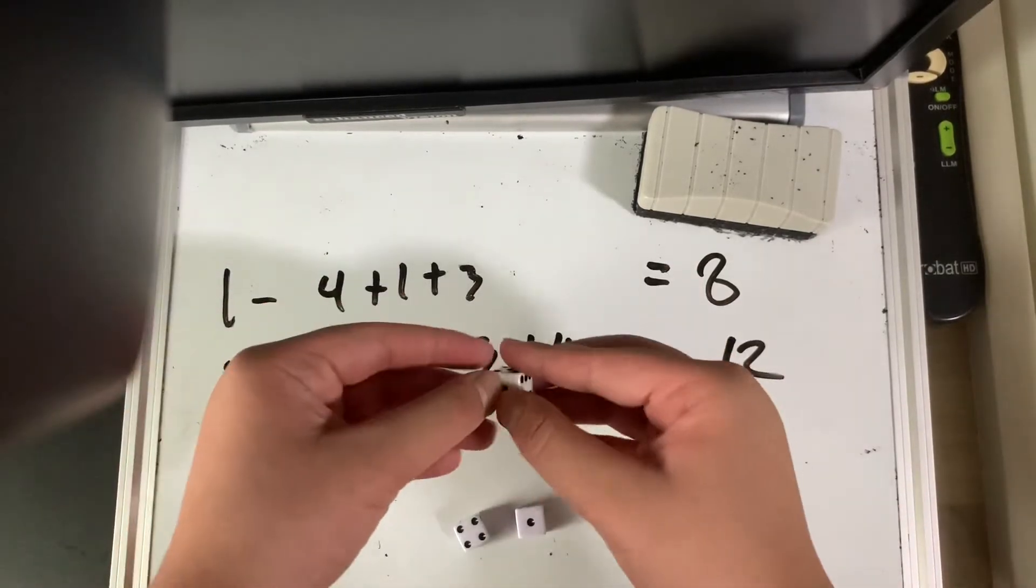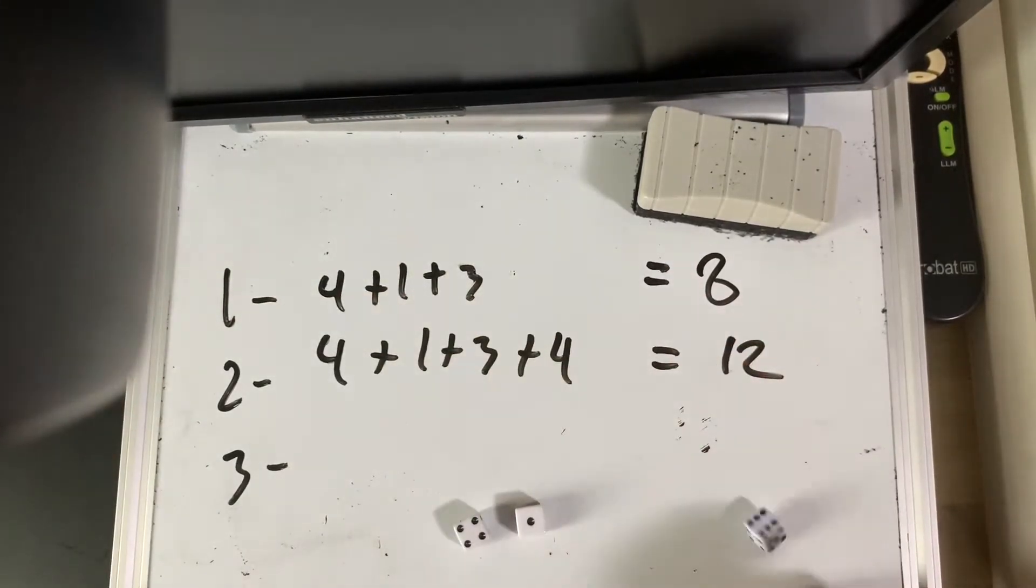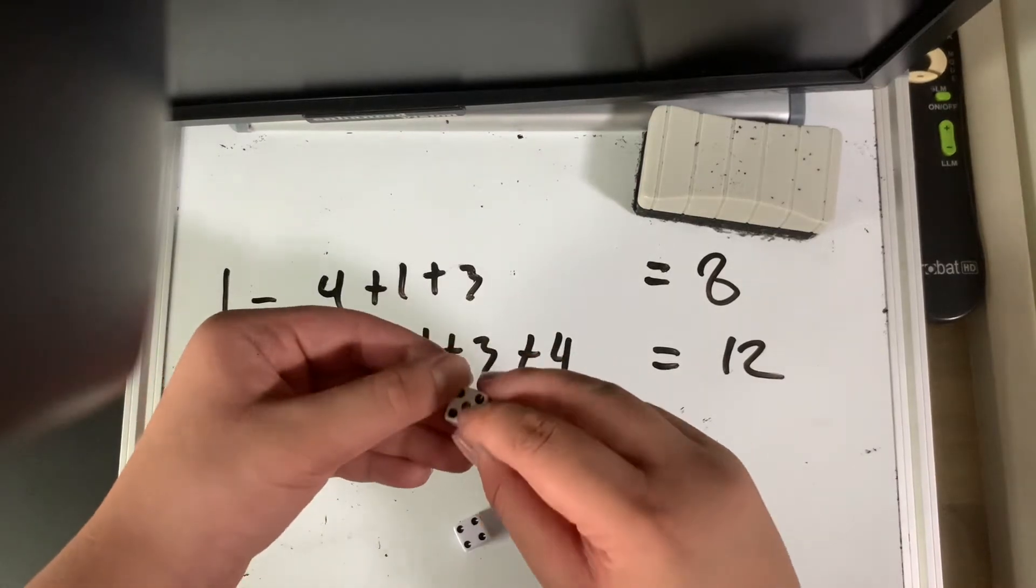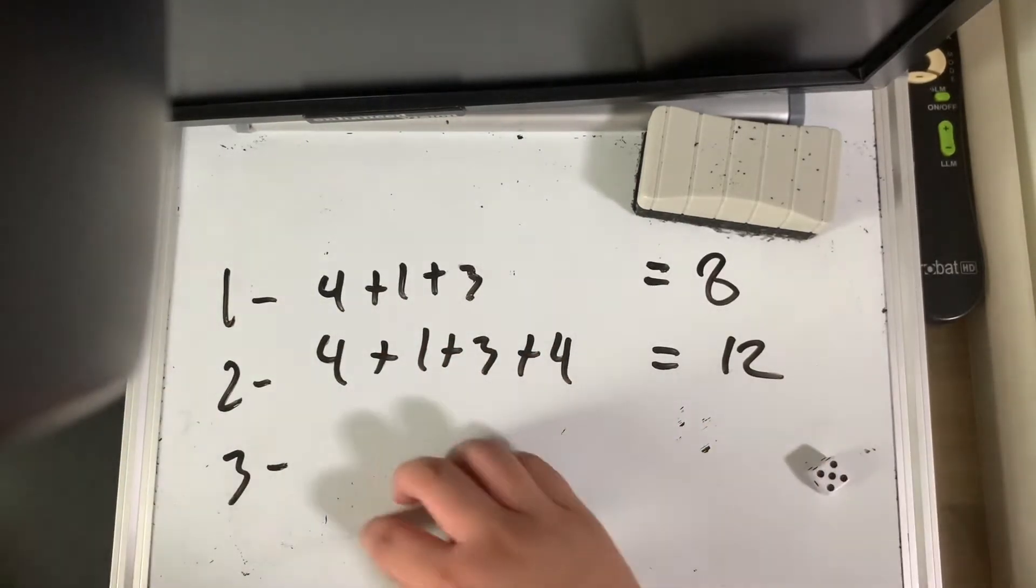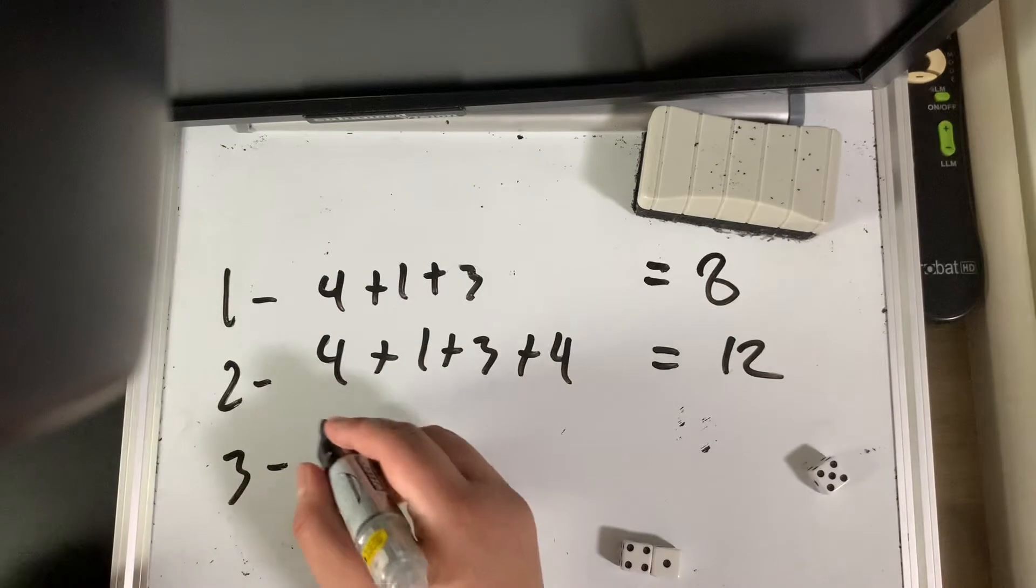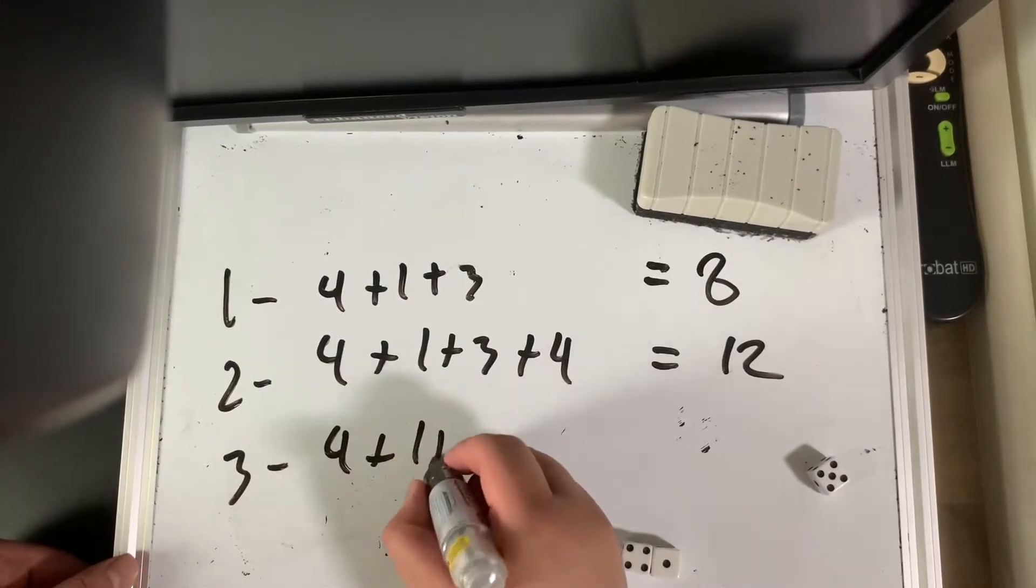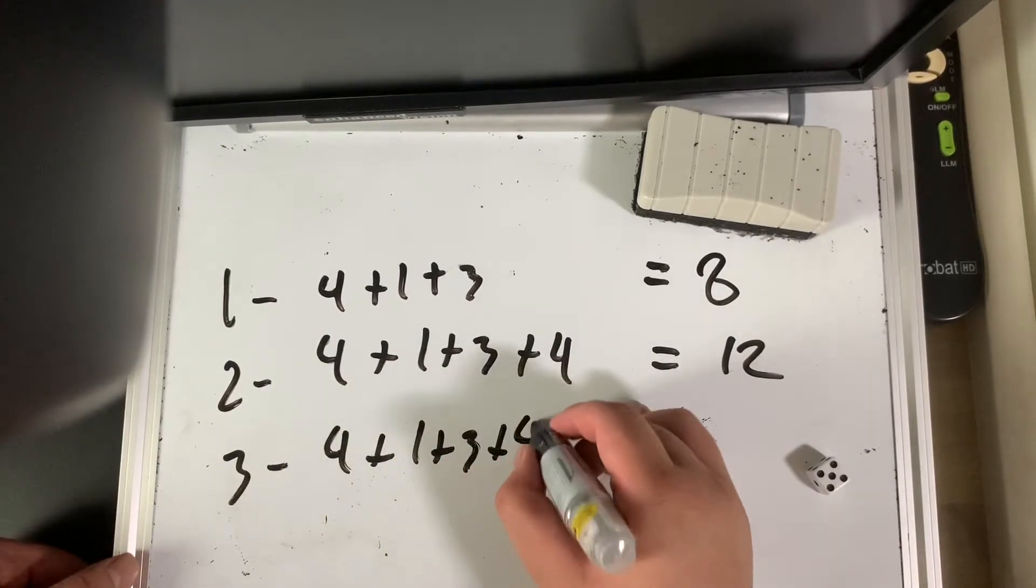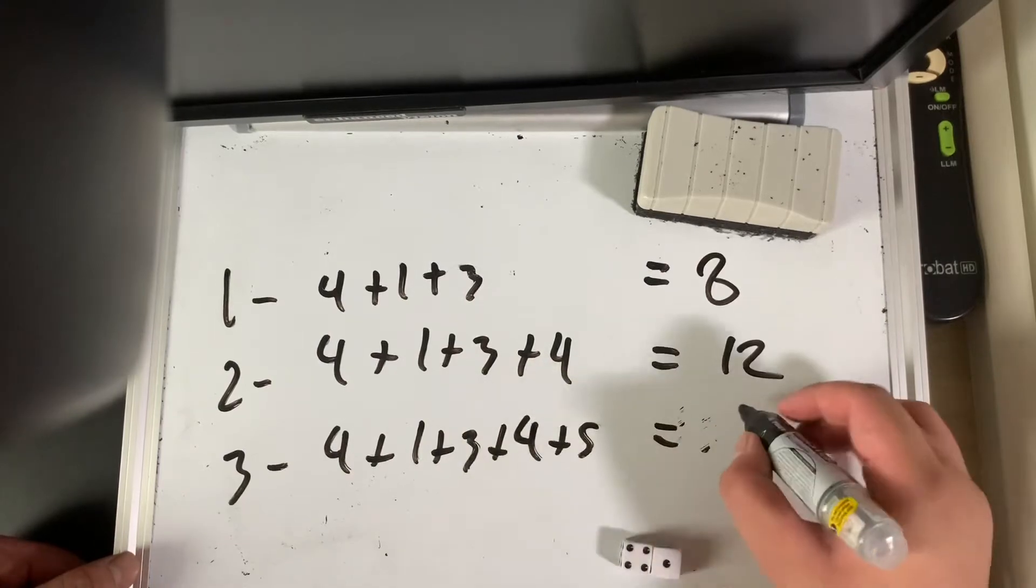Then this one, the one that you took the bottom number of, re-roll it. Then you get this new number, 5. Then add that to the sum, it's the third step. 4 plus 1 plus 3 plus 4 plus 5, then you get 17.